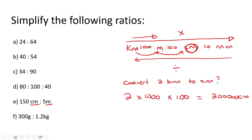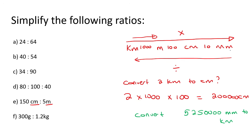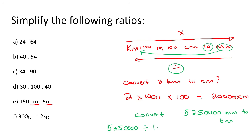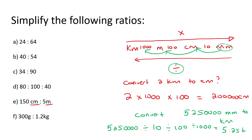Here's another example: convert 5,250,000 millimeters to kilometers. We're starting with millimeters and going all the way to kilometers — going left, so we divide. Divide by 10 to get to centimeters, then divide by 100, then divide by 1000. That gives you 5.25 kilometers.